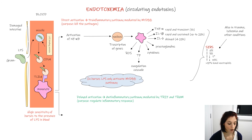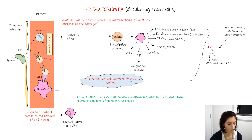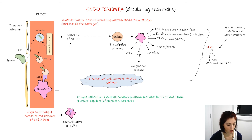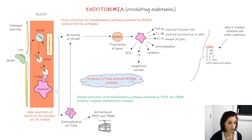For this pathway, the Toll-like receptor 4 needs to be internalized. The internalization also stimulates the activation of the nuclear factor Kappa B, but also of these other factors.